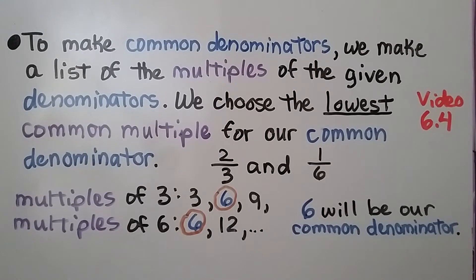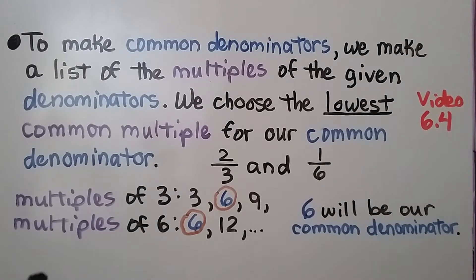To make common denominators, we make a list of the multiples of the given denominators. We choose the lowest common multiple for our common denominator. We learned how to do this in video 6.4, which is linked in the description.